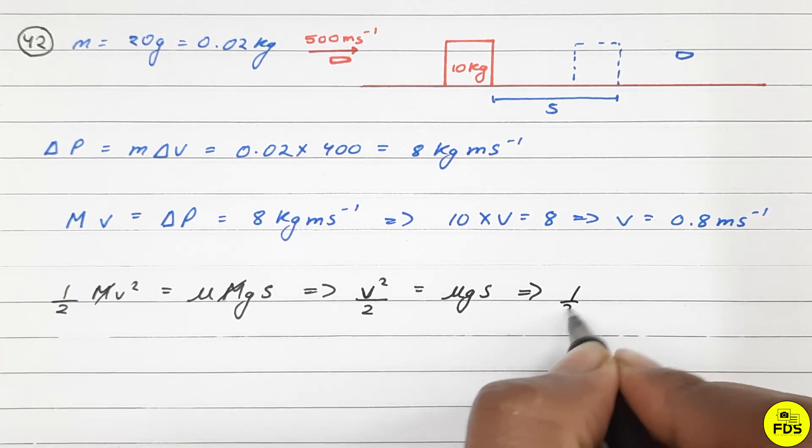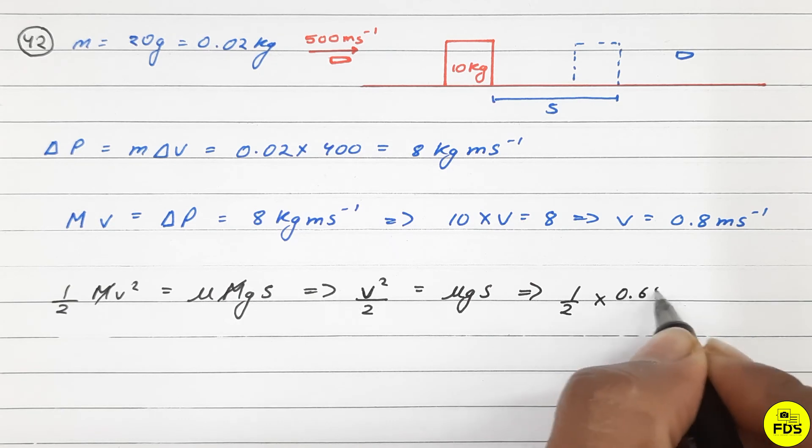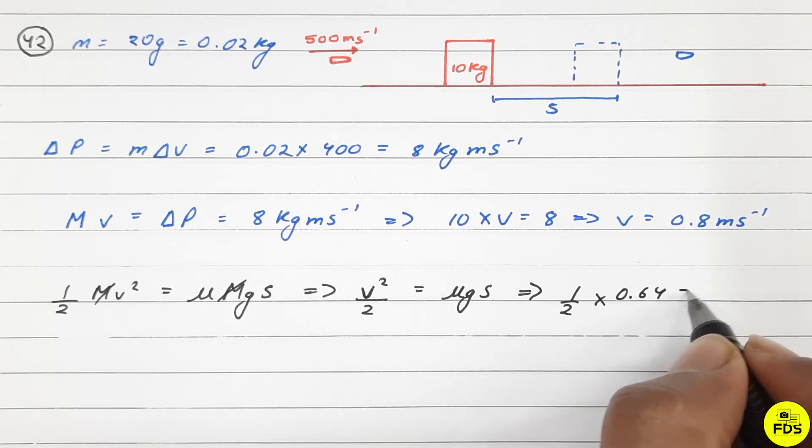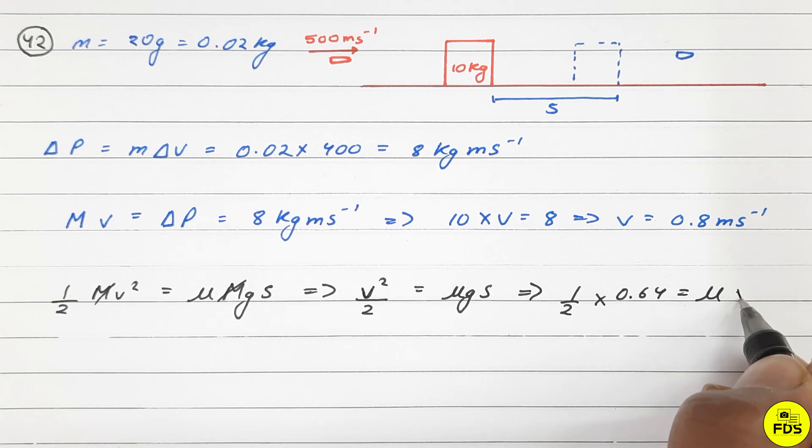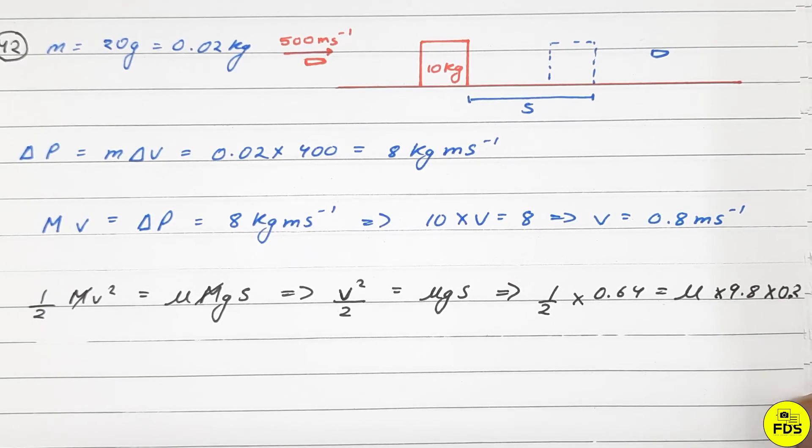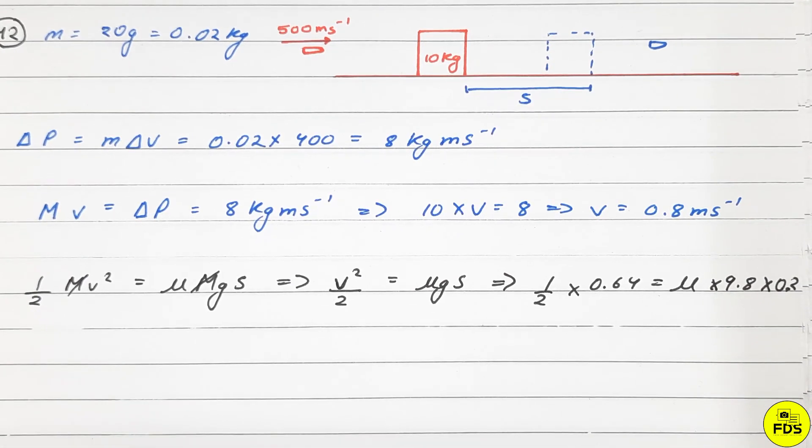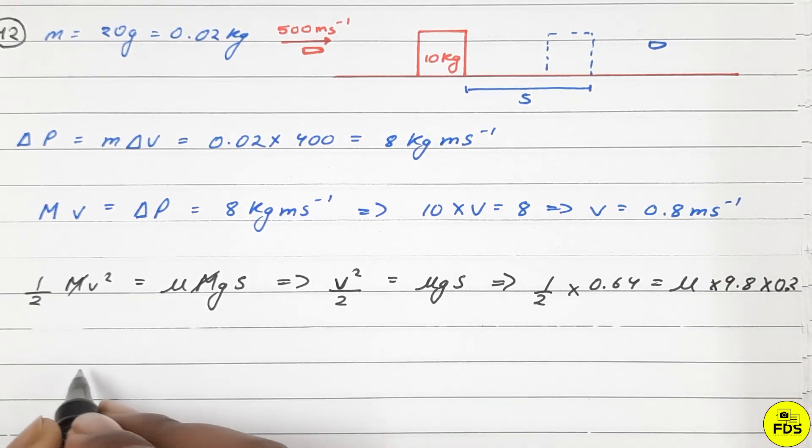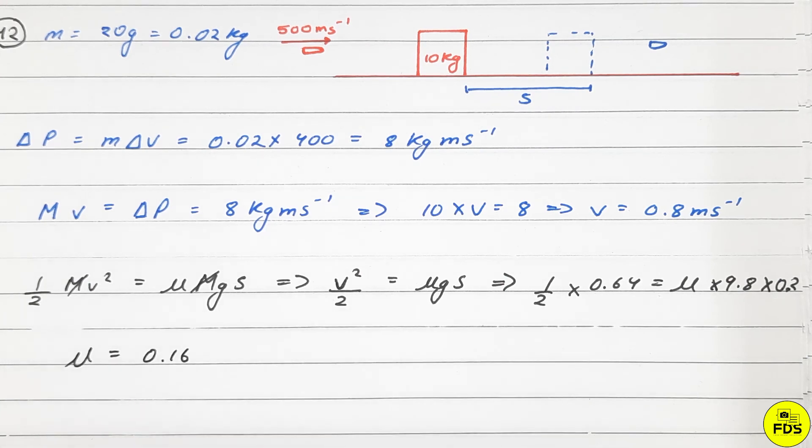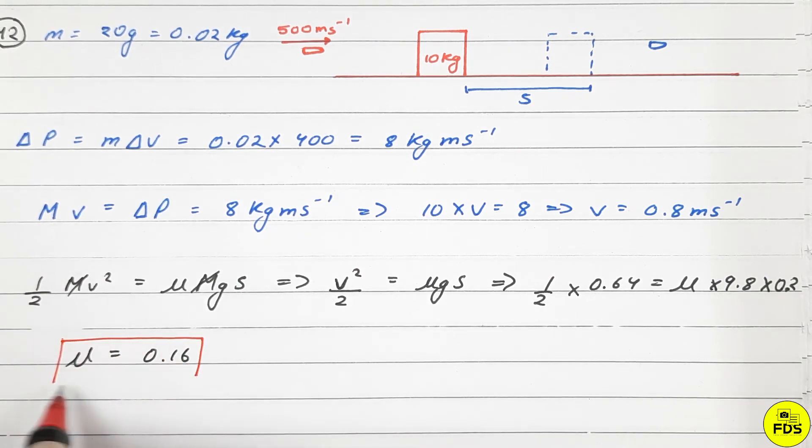Substituting values: half times 0.64 equals μ times 9.8 times 0.2. Solving for μ, we get μ equals 0.16. This is the friction coefficient.